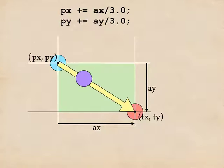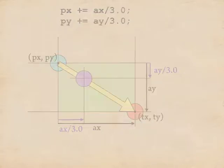And we could even think of this as a new shorter arrow. The horizontal extent of this arrow is AX over three. The vertical extent of the arrow is AY over three. So, by scaling AX and AY, I can make this arrow shorter or longer. Let's now look at this in code.